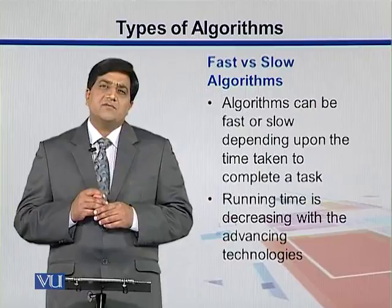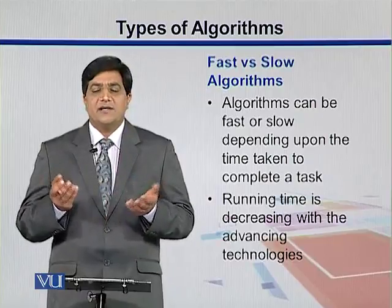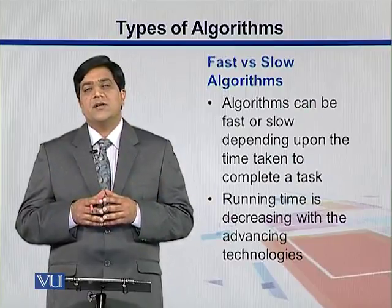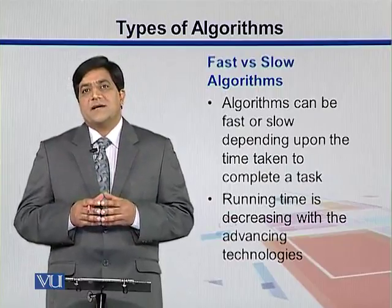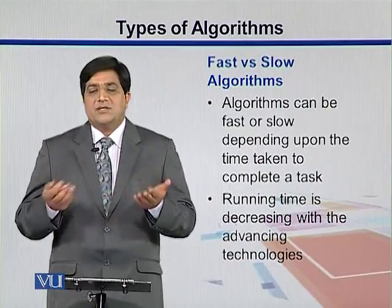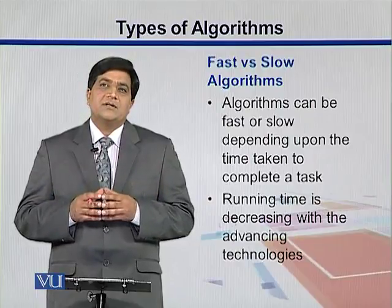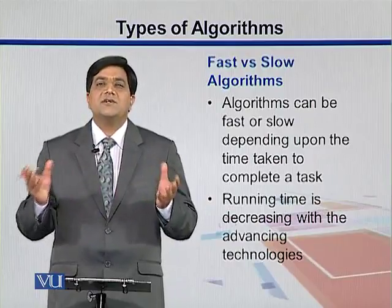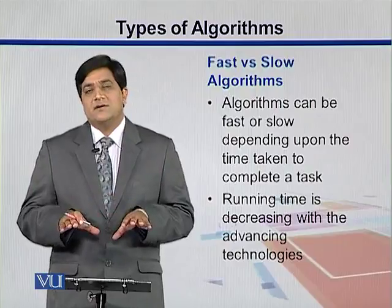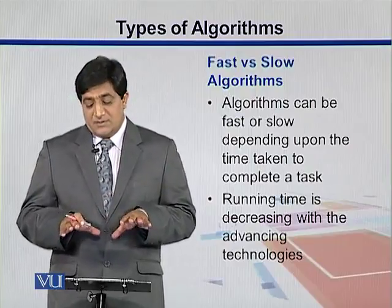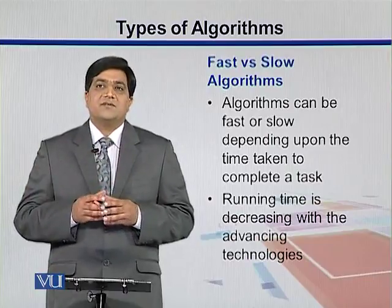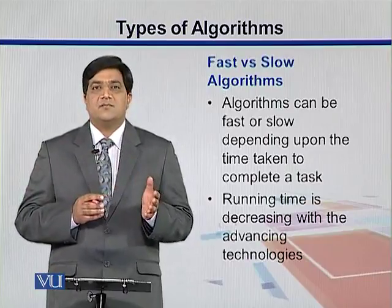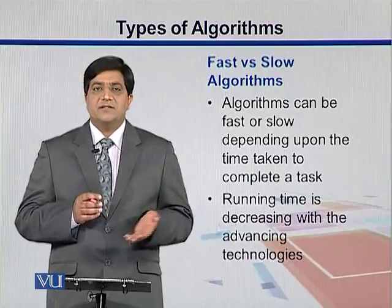A fast algorithm is one that performs the action quickly, as the name indicates, whereas the slow algorithms are slow. Since technologies are changing, we are not concerned about the actual time it's taking, but we can classify this problem with the help of the number of steps involved.